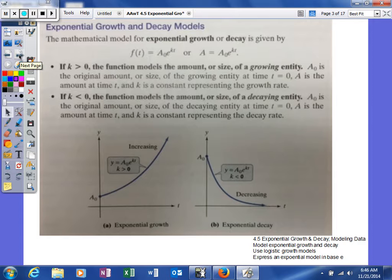First thing we need to talk about is exponential growth and decay models. So f(t) equals A₀e^(kt), or A equals A₀e^(kt). If k is greater than 0, the function models the amount or size of a growing entity. A₀ is the original amount or size of the growing entity at time 0, and A is the amount at time t. k is the constant representing the growth rate.